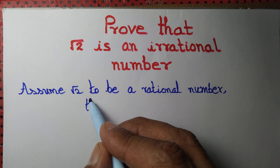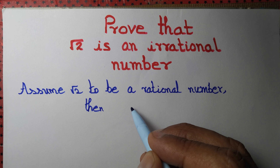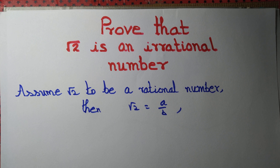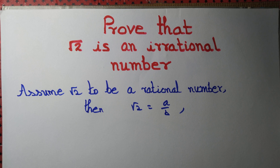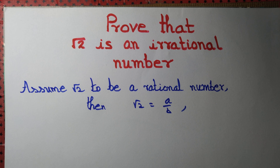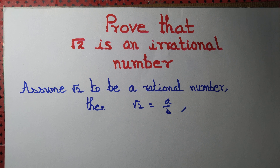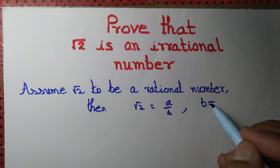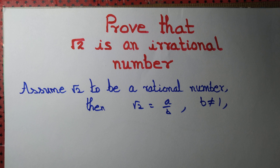Then √2 must be equal to a/b, where a and b are integers and b is not equal to 0. Now √2 cannot be equal to an integer: 1² ≠ 2, 2² ≠ 2, so √2 cannot equal any integer, and therefore b cannot equal 1.